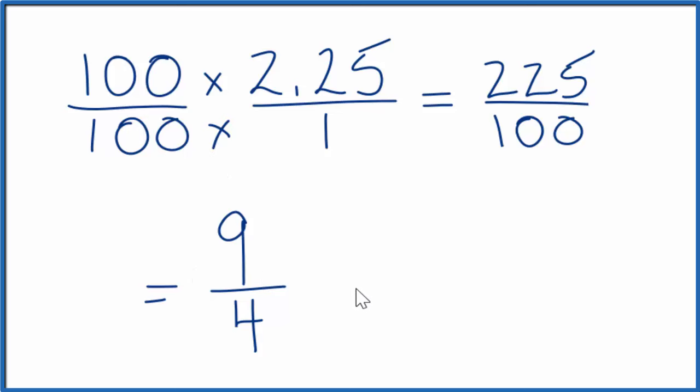But we could put this in a mixed format as well. So 4 goes into 9 two times. 2 times 4 is 8. So we have 1 left over, 1 over 4. So you could think of 2 times 4 is 8, plus 1, that gives us the 9, 9 fourths.